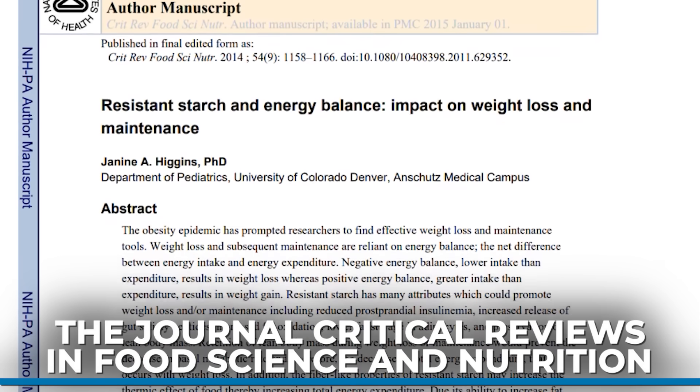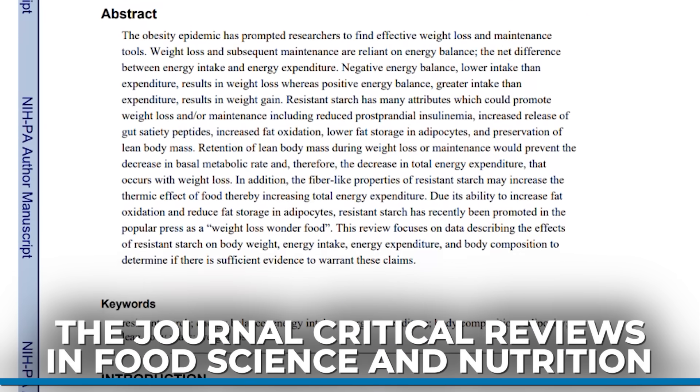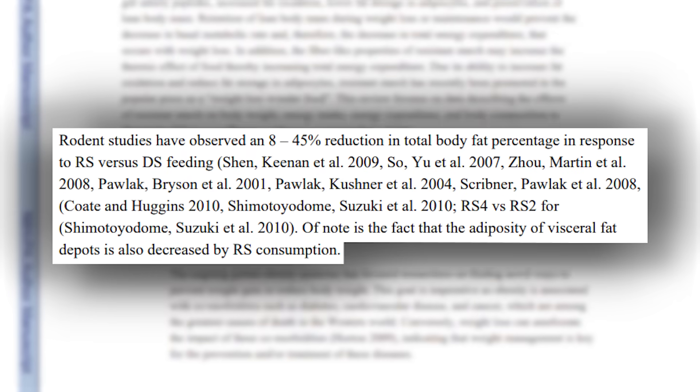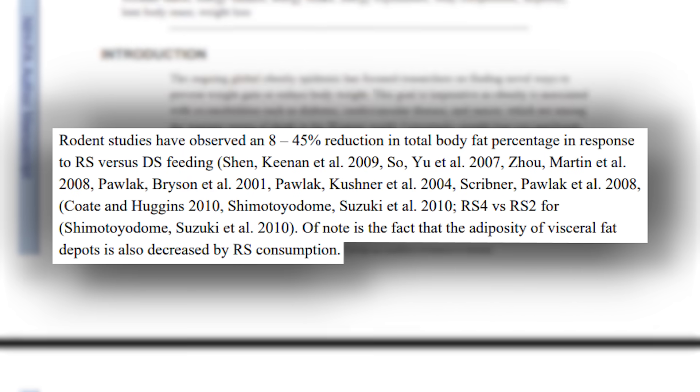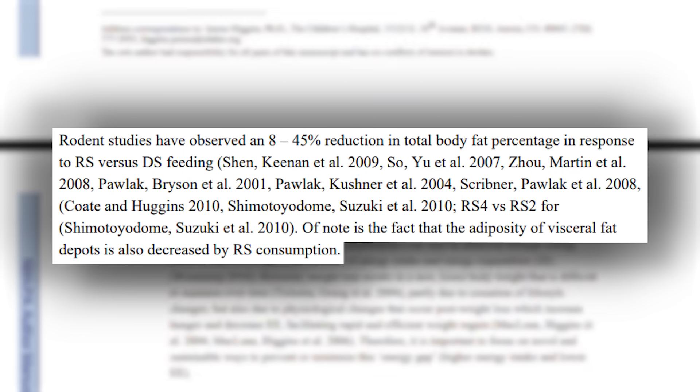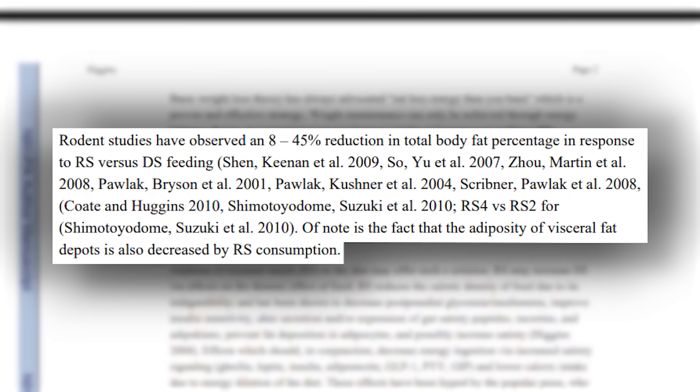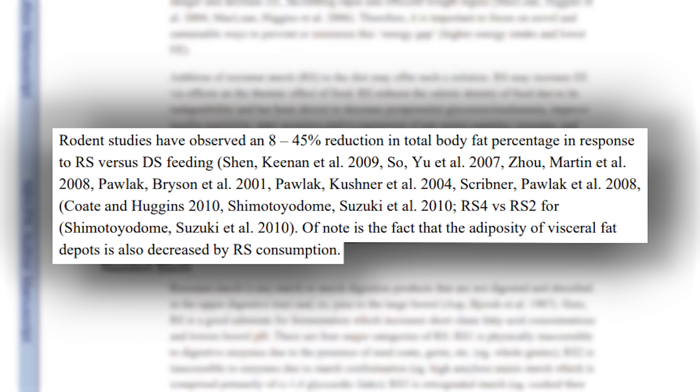From a visceral fat perspective, there's a study published in Critical Reviews in Food Science — a rodent model — where they gave rodents regular food and then regular food plus resistant starch. The resistant starch group ended up having an 8 to 45% reduction in total fat mass, of which a large percentage was visceral fat. We've also seen strong evidence in weight loss, satiety, and GLP-1 levels having a huge impact on satiety and overall insulin function and how insulin levels come down.